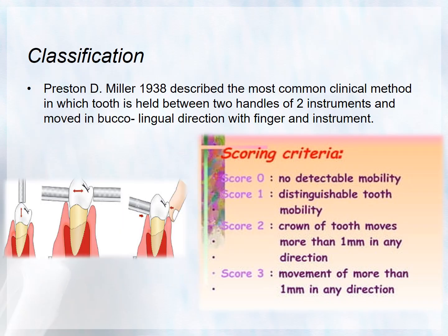The most recognized classification of tooth mobility is by Miller in 1938. The tooth is held between two instrument handles and moved in the buccolingual direction. Mobility is scored 0 to 3: Score 0 — no detectable mobility; Score 1 — distinguishable tooth mobility; Score 2 — crown moves more than 1 mm in any direction; Score 3 — movement of more than 1 mm both horizontally and vertically.